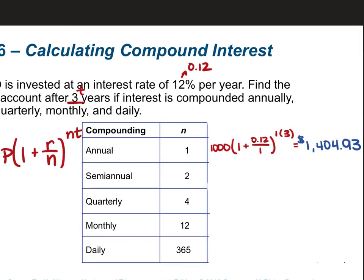For semi-annual, you're just changing N to 2. So you have 1,000 times 1 plus 0.12 divided by 2 to the power of 2 times 3, which equals 6 in the exponent. That gives us $1,418.52.